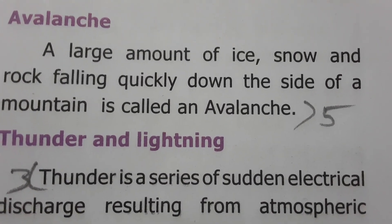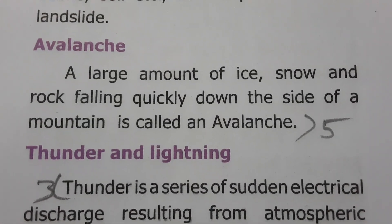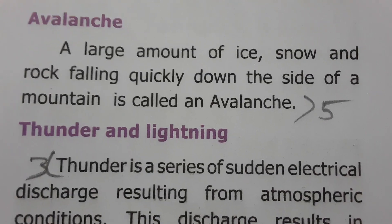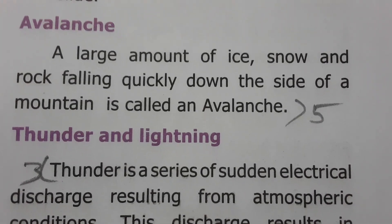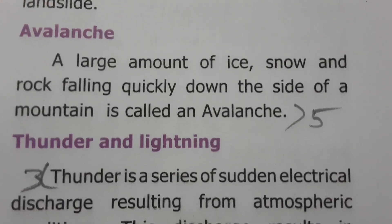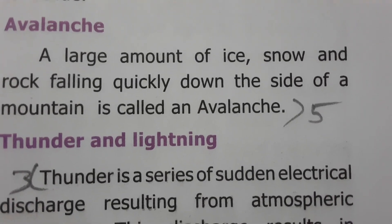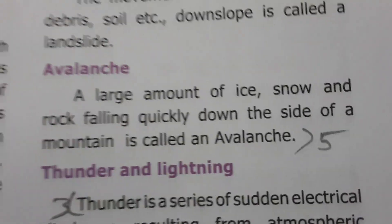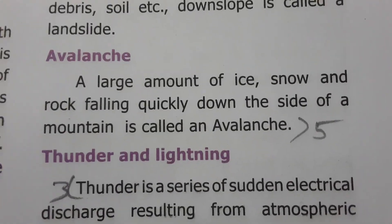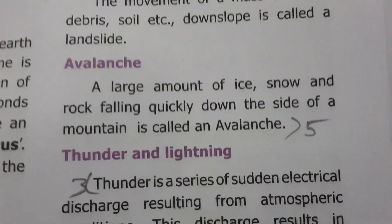An avalanche is a large amount of ice, snow, and rock falling quickly down the side of a mountain. That is the definition of an avalanche.